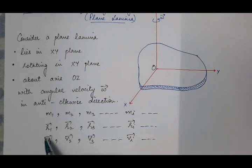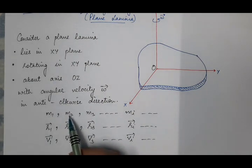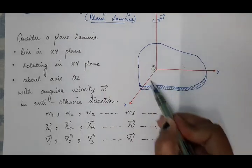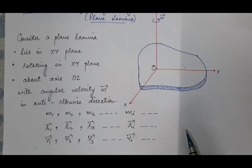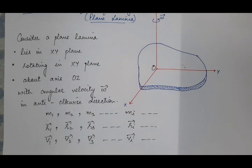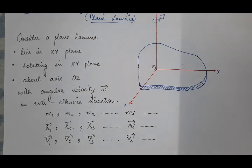The particles have angular velocities ω1, ω2, ω3, …, ωi. However, as proved in the previous lecture, every particle inside a rigid body rotates with the same angular velocity as the whole body, so ω1 = ω2 = ω3 = … = ωi = ω. The relation between angular velocity and linear velocity in magnitude form is v = rω, and in vector form it is v = ω × r.